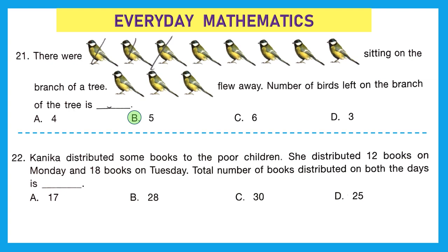Question 22: Kanika distributed some books to poor children — 12 books on Monday and 18 books on Tuesday. The total number of books distributed on both days is 12 plus 18. Adding: 2 plus 8 is 10, write 0 and carry 1 to the tens place, giving 3 tens. So 12 plus 18 equals 30. The correct option is C, 30.